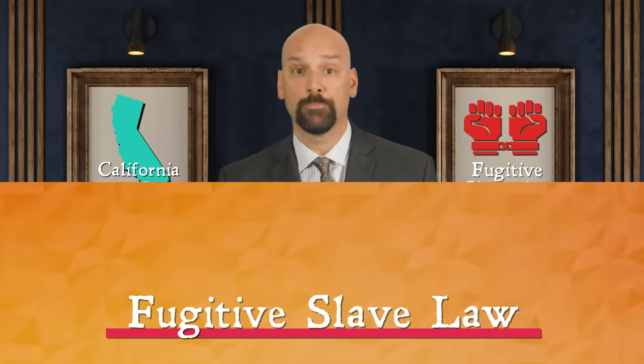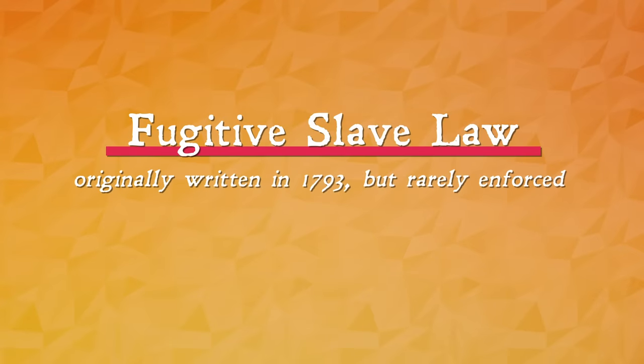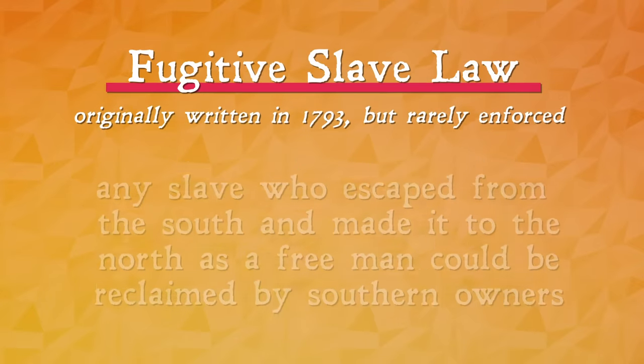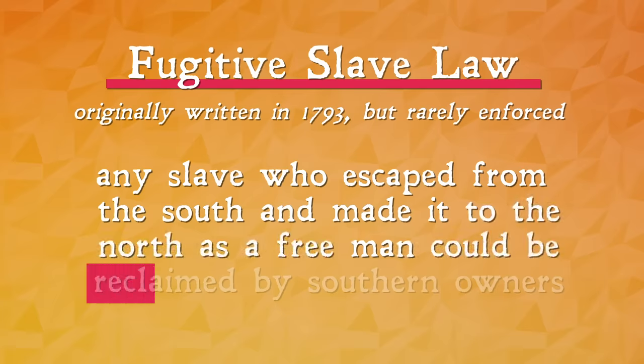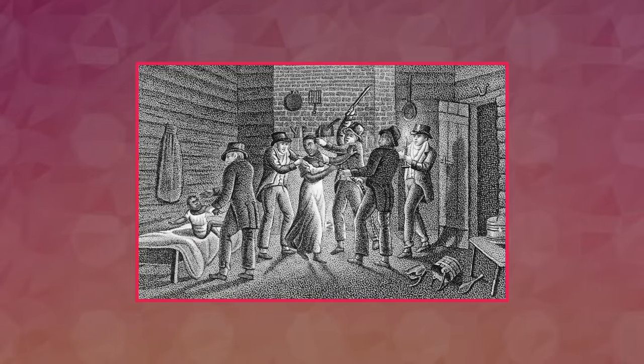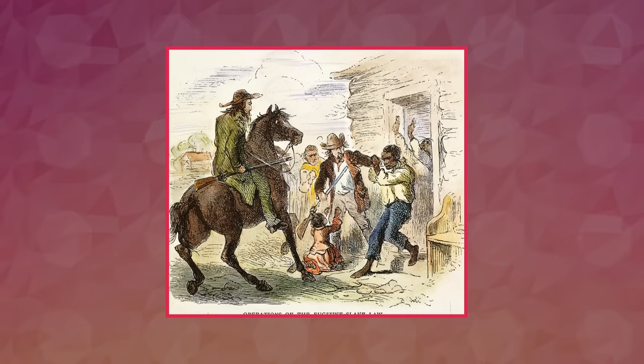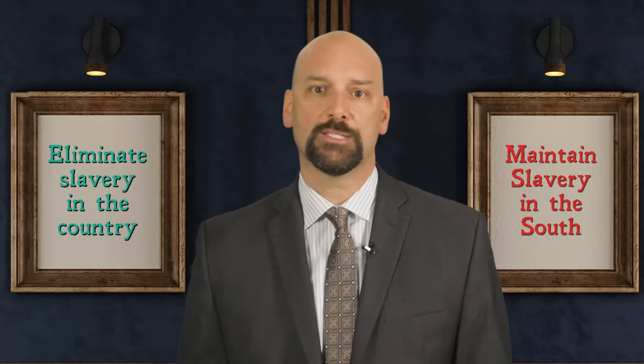The Compromise of 1850 was a collection of five laws that admitted California as a free state. It also made a major amendment to the Fugitive Slave Law, originally written into the Constitution in 1793 but rarely enforced. The new update stated that any slave who escaped from the South and made it to the North as a free man could actually be reclaimed by the Southern owners. Even after slaves achieved freedom in the North, they were still not safe. Because of this, the gruesome nature of slavery became more apparent to Northerners. After 1850, the South pivoted away from maintaining a balance and toward protecting the status quo, while the North, now seeing the brutality of slavery firsthand, saw a moral imperative to eliminate slavery altogether.